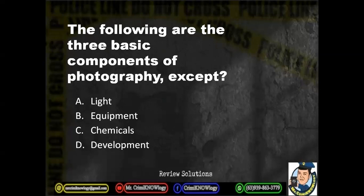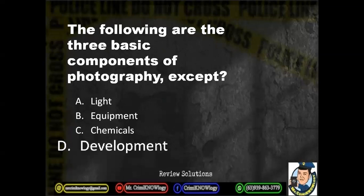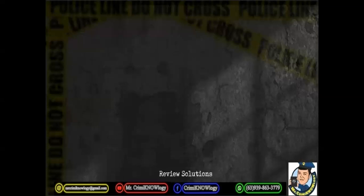Hope you have your answer. The correct one is development. A, B, and C are the three components of photography. We need light, we need equipment such as a camera, and chemicals for our development or the processes. So development is a process, not a component.